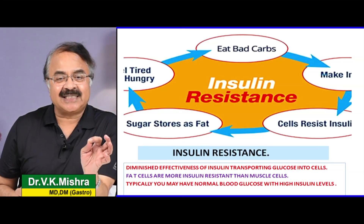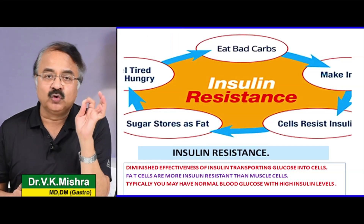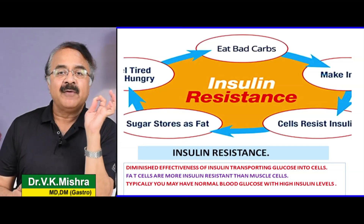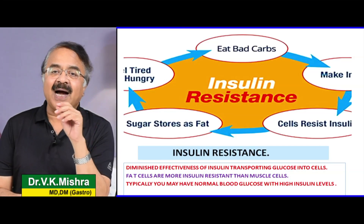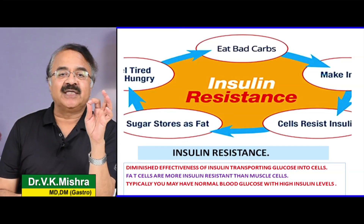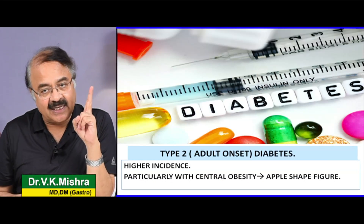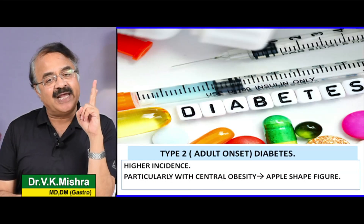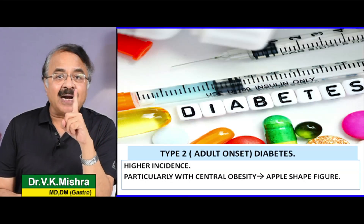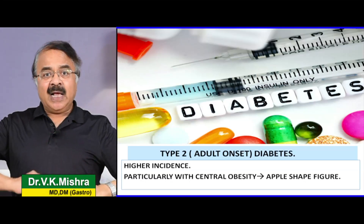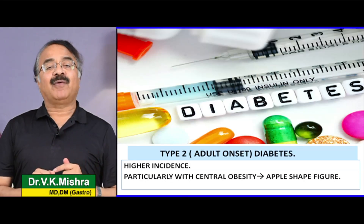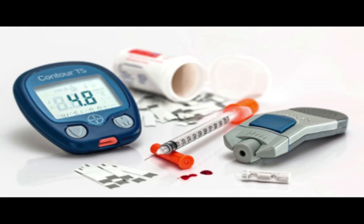यह basically the insulin resistance which is the key to obesity, which is the most important thing. अगर आपको obesity है तो आपका risk type 2 diabetes का काफी बढ़ जाता है। Science मानती है कि incidence काफी ज़्यादा है। अगर आपको central obesity है, यह आपका पेट apple shape में है, तो possibility है कि समय के साथ आपको type 2 diabetes हो जाएगी।